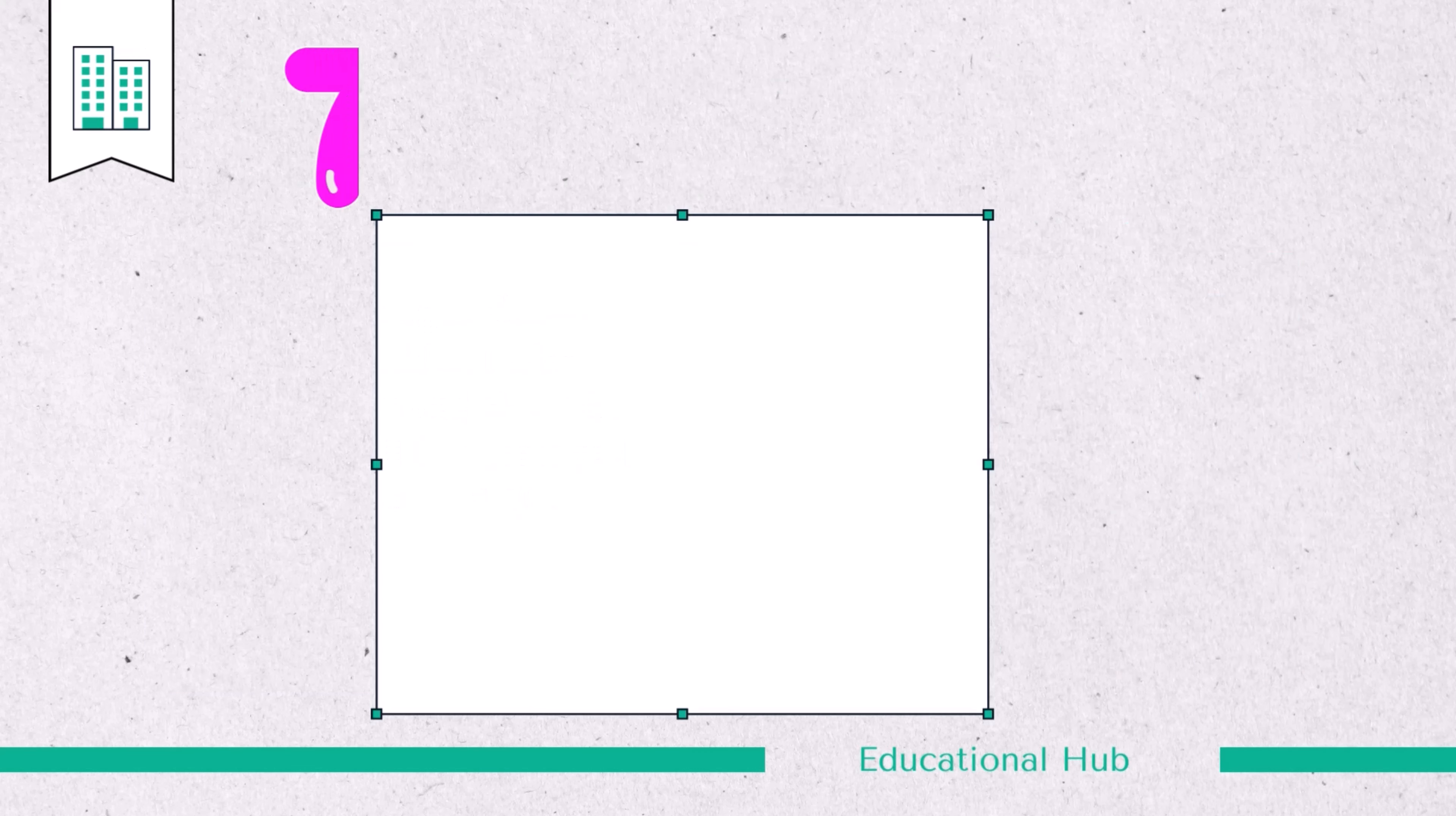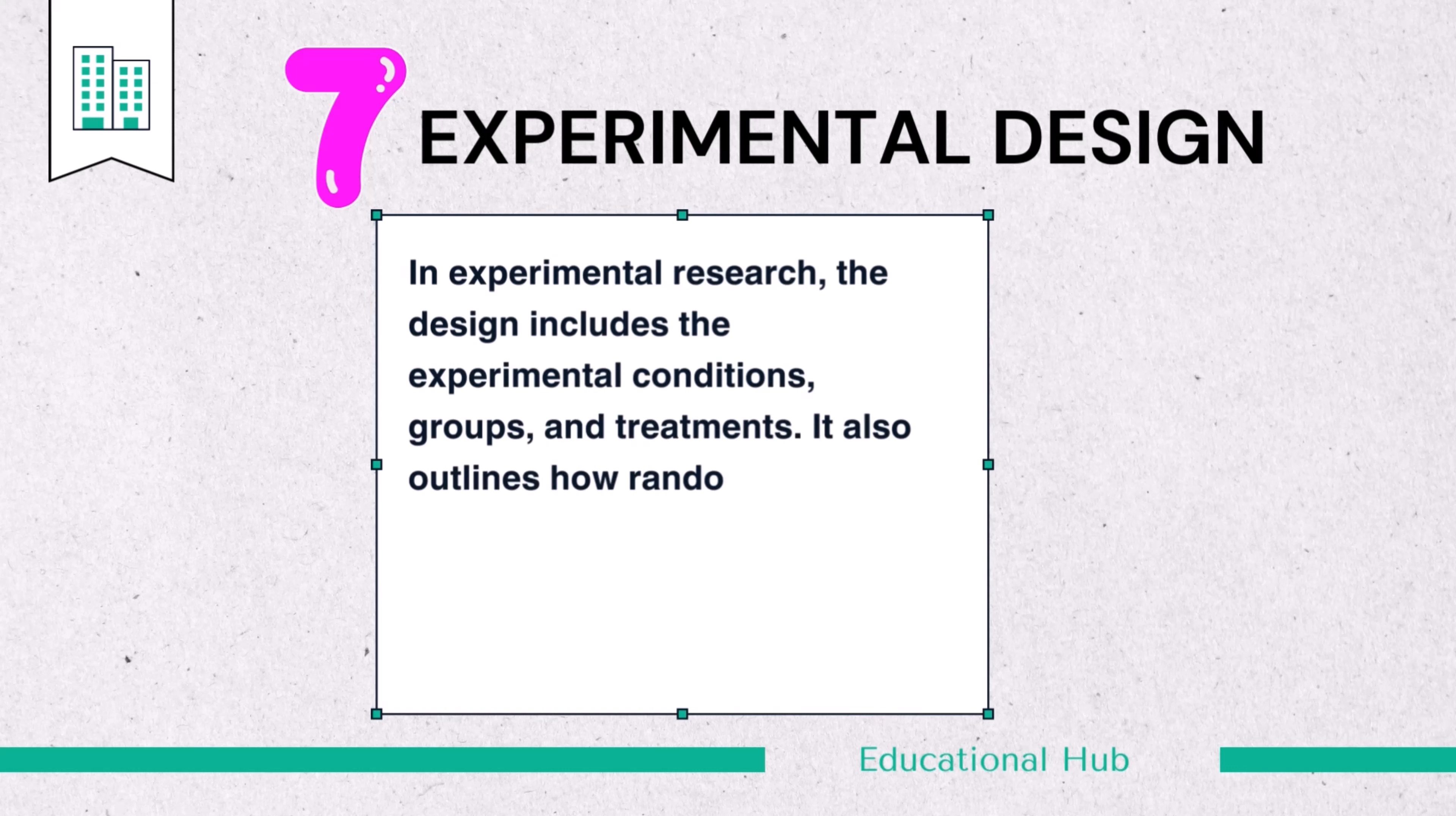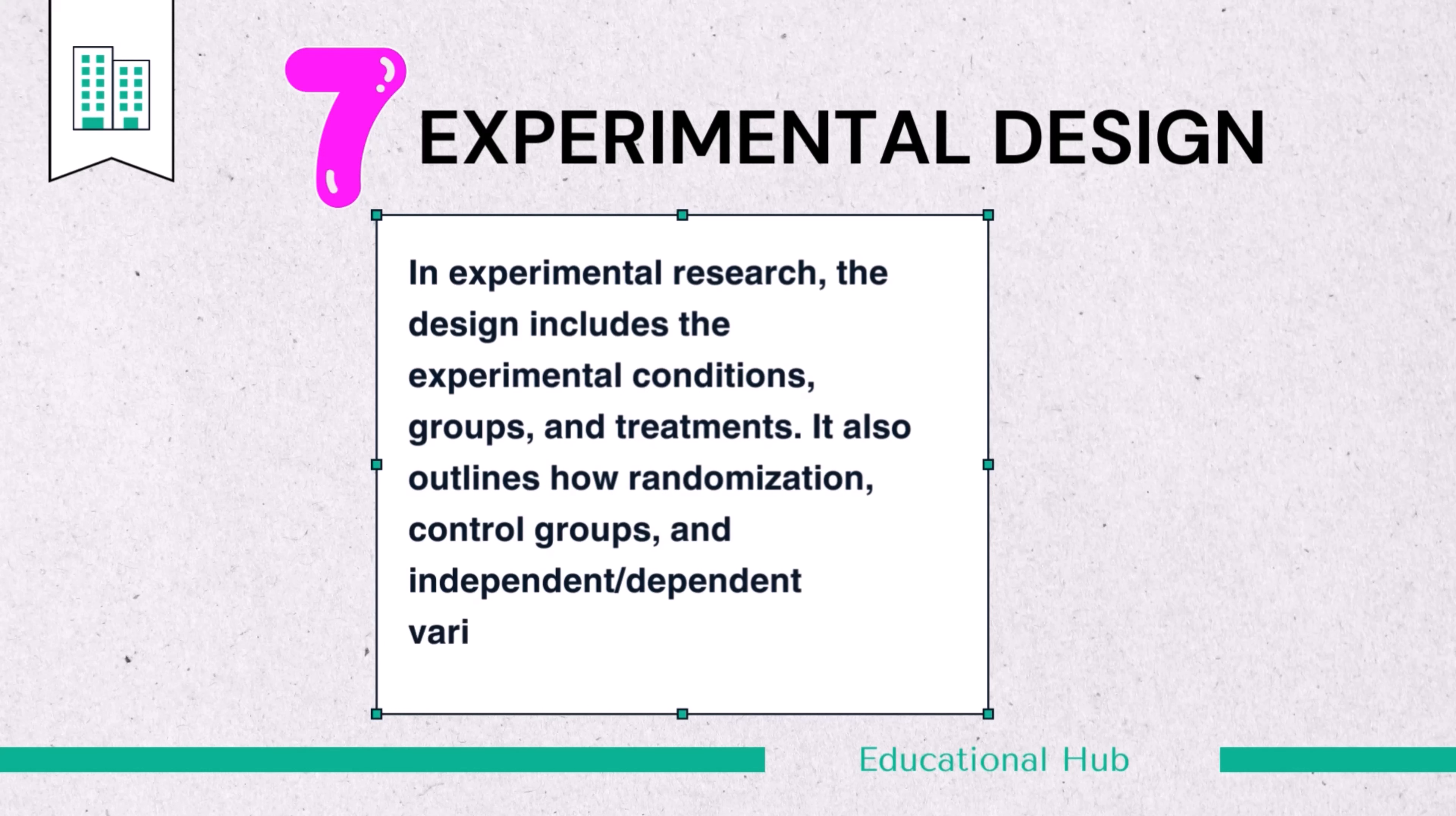7. Design. If applicable, in experimental research, the design includes the experimental conditions, groups, and treatments. It also outlines how randomization, control groups, and independent and dependent variables will be managed.